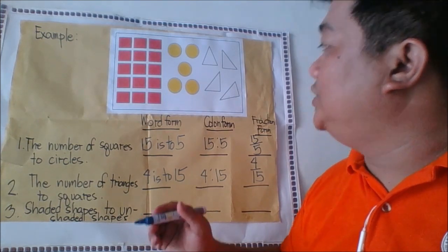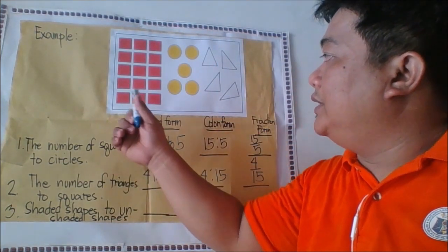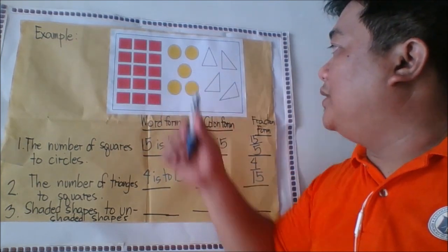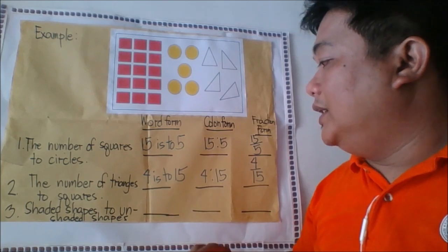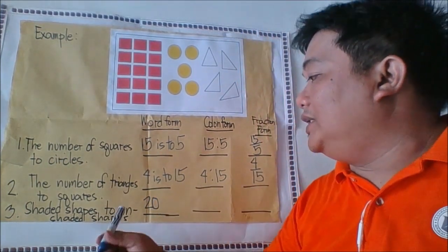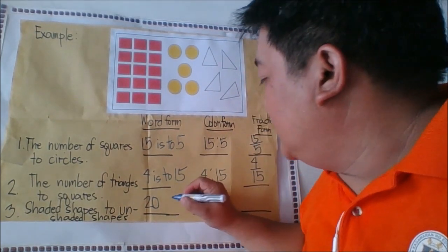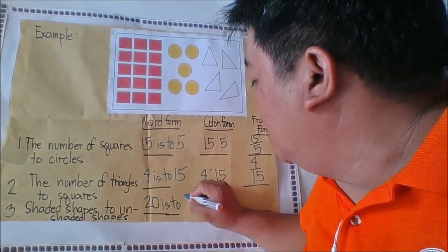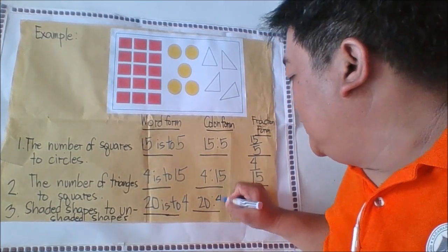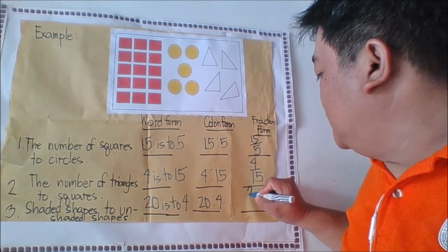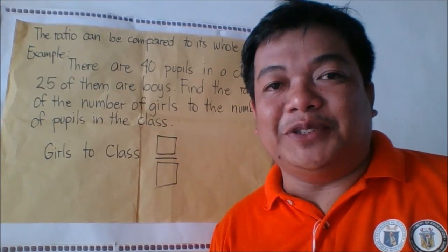Next, number three: shaded shapes to unshaded shapes. How many shaded shapes do we have? The squares and circles are shaded shapes, so we combine them: squares are fifteen, circles are five, so fifteen plus five equals twenty. The unshaded shapes are the triangles, and we have four triangles. So twenty is to four. In colon form: twenty colon four. In fraction form: twenty over four.